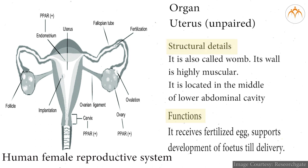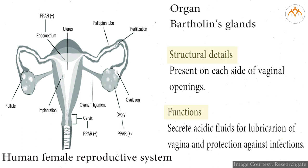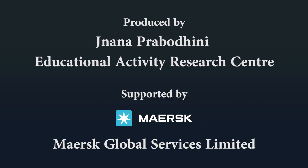The uterus is unpaired, also called the womb. Its wall is highly muscular and it is located in the middle of the lower abdominal cavity. It receives the fertilized egg and supports development of the fetus till delivery. The vagina is unpaired — a tubular structure acting as the passage from the uterus to the outside. It acts as a passage for menstrual flow and intercourse, and serves as the birth canal. Bartholin's glands are present on each side of the vaginal opening, secreting acidic fluids for lubrication of the vagina and protection against infections.